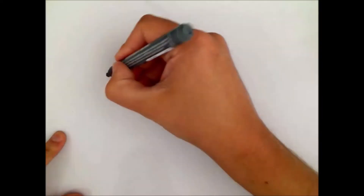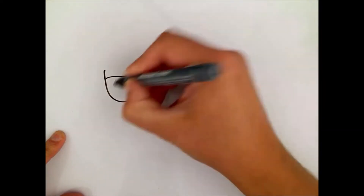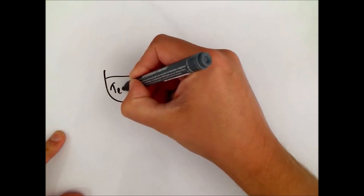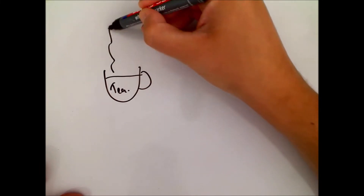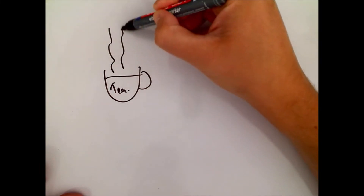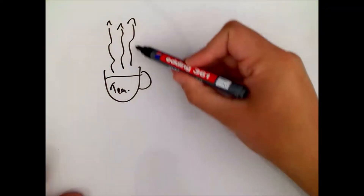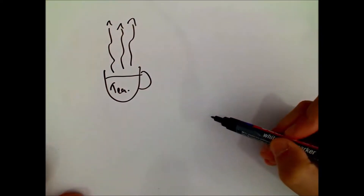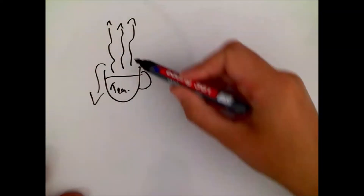Let's think about when we have a mug of a hot drink. We always see steam coming off of it, and we always see it rising upwards. So what I want us to think about is why does that steam head upwards and not say out and down? What is it that's making it go up instead?